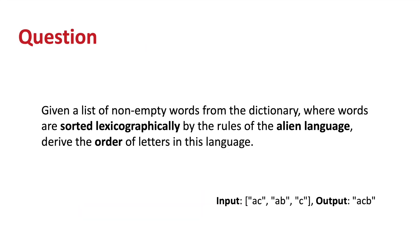Here's the question. The short name for this interview was 'Alien Dictionary.' The longer version is: given a list of non-empty words from the dictionary where the words are sorted lexicographically by the rules of the alien language, derive the order of letters in this language. Here's a quick example: given the list of words AC, AB, and C, we need to compare them and find the lexicographical order by the rules of the alien language.